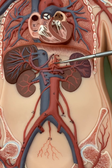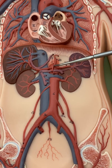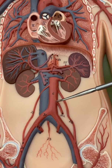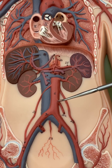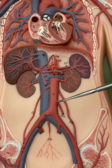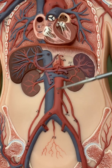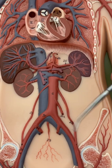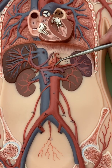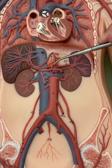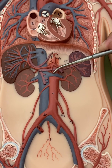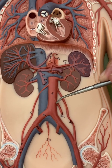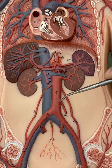The best way to remember those three trunks is C-S-I. These are singular — not bilateral — coming off the middle of the abdominal aorta. C is for the celiac trunk, S is for the superior mesenteric, and I is for the inferior mesenteric.